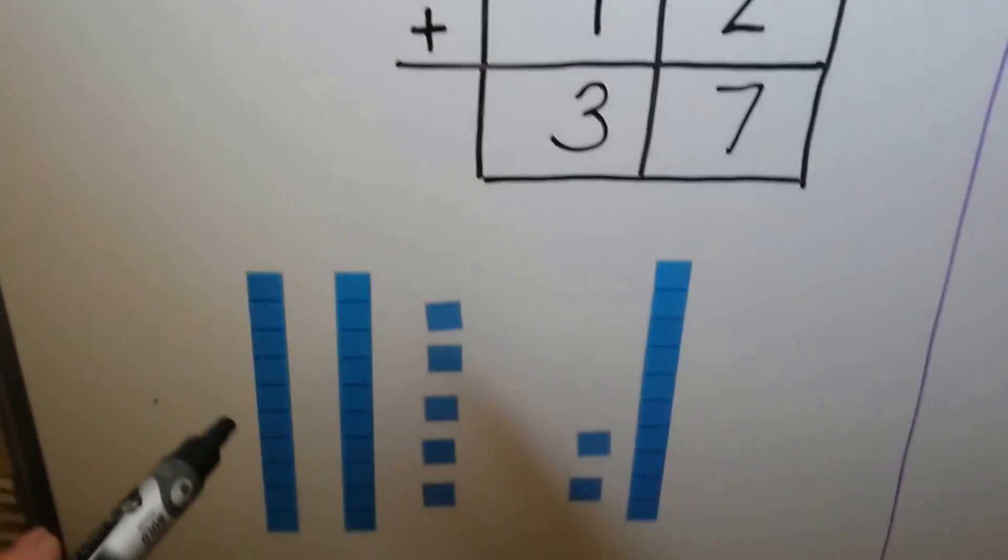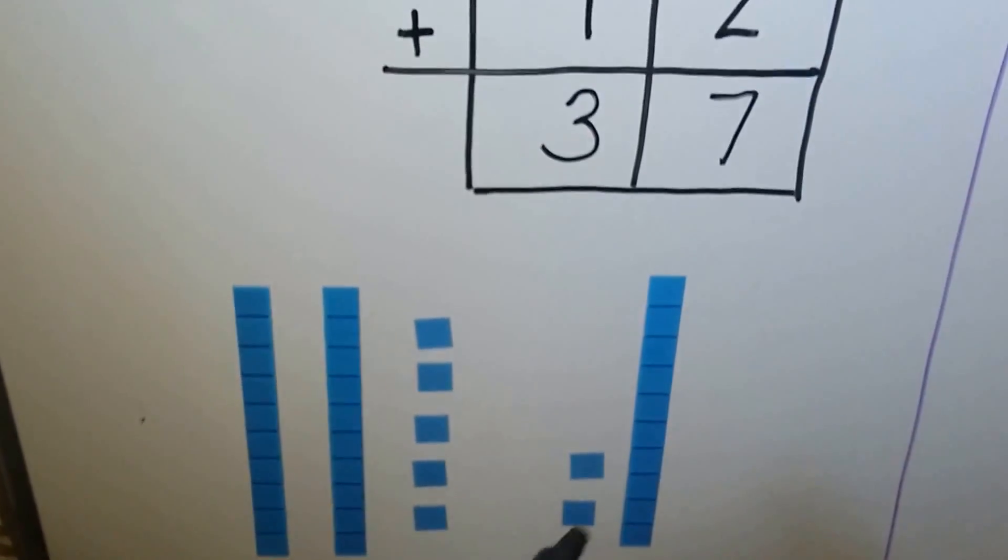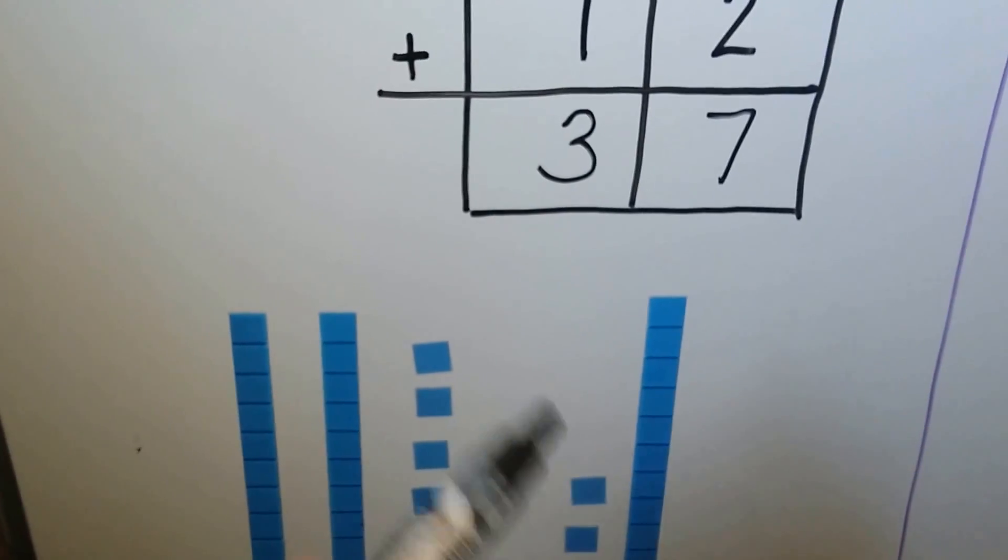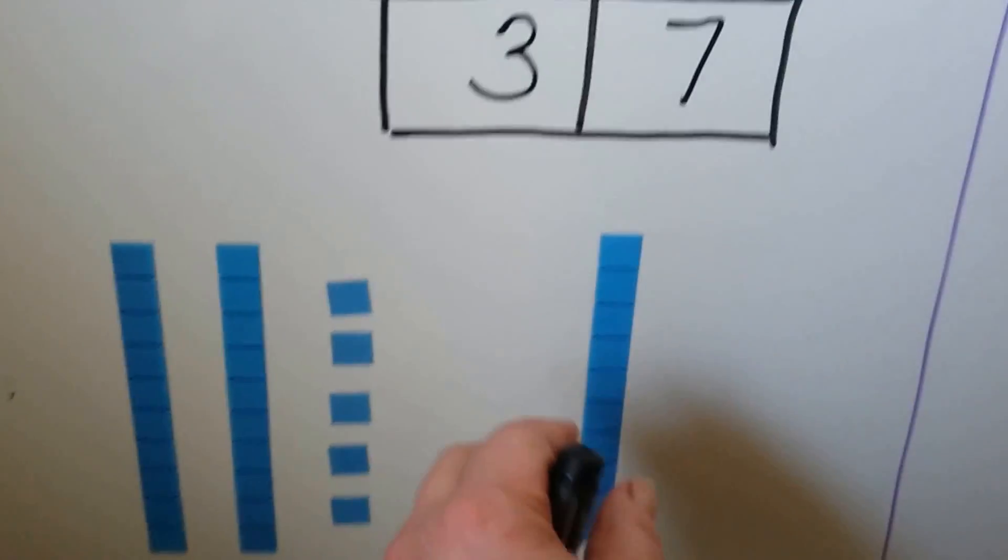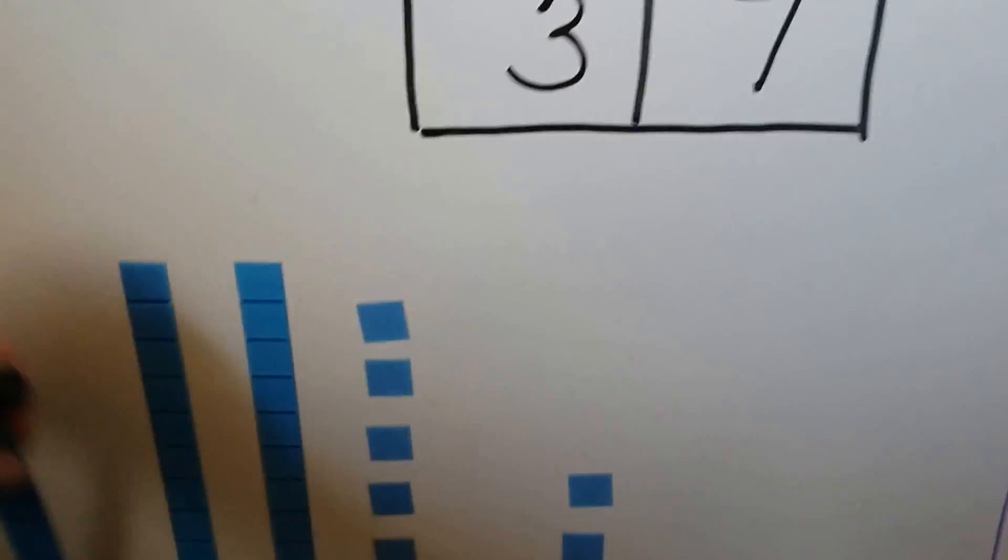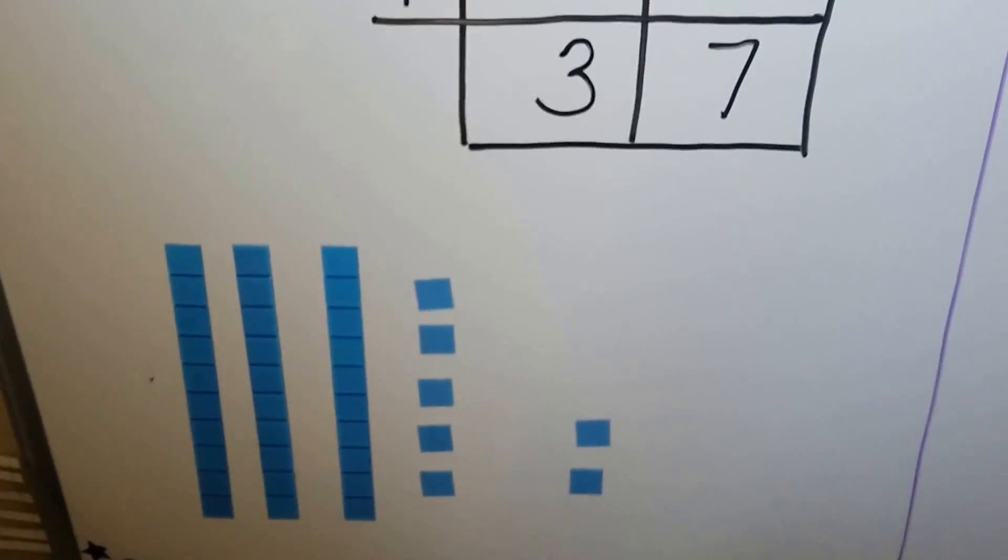What we did was we had 25, 2 tens and 5 ones. And we had 12, that's 1 ten and 2 ones. And we put them together. We put the ones together. We put the tens together. So we had 35, 36, 37.